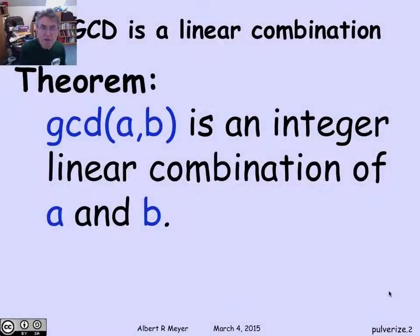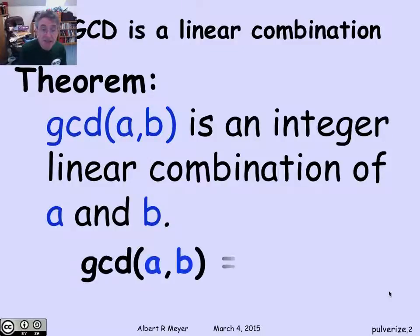The theorem that is the culmination we're aiming for is that the GCD of two numbers is an integer linear combination of the two numbers. That is, the GCD of A and B is simply SA plus TB, where S and T are integers. What the pulverizer enables us to do is given A and B, we can find S and T virtually as efficiently as the Euclidean algorithm.